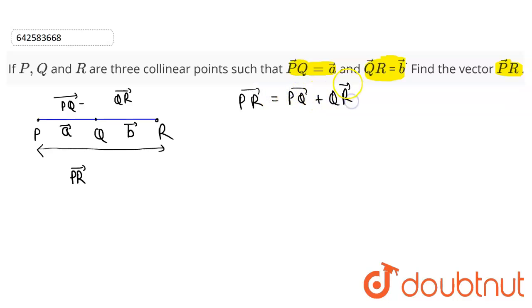plus QR vector. So PR will be equal to PQ vector, which is our a vector, and QR vector, which is our b vector. So that means PR vector is equals to a vector plus b vector. This completes our solution.